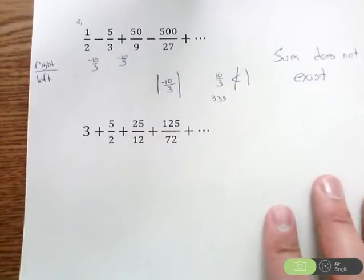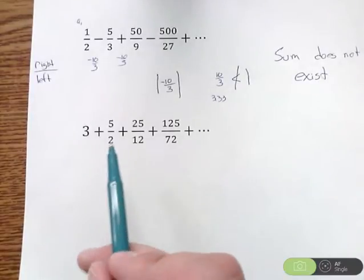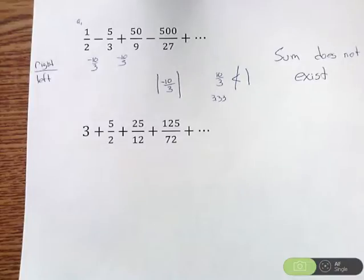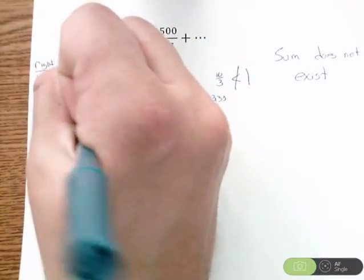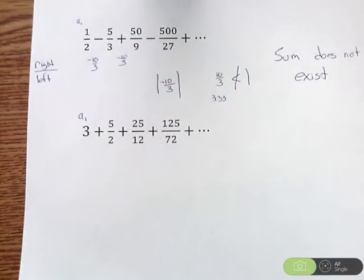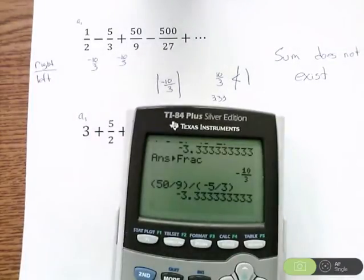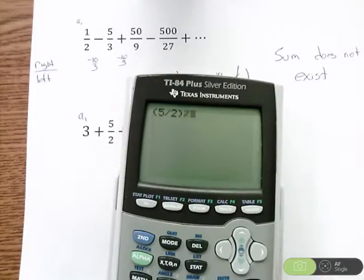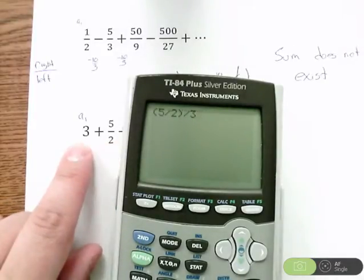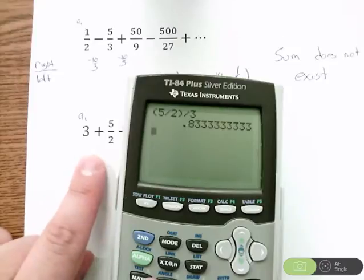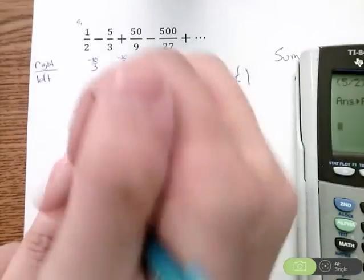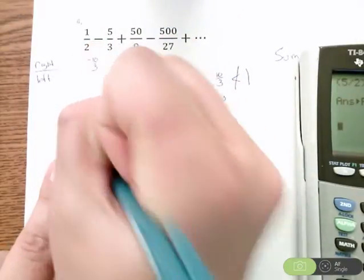All right, one last one and I'll wrap it up. We have 3 plus 5/2 plus 25/12 plus 125/72. Again, A1 is 3. For R, take right divided by left. In a calculator, I'm going to do 5/2 divided by 3. I got 0.833333. I want the fraction, so hit math, then fraction: 5/6. So our multiplier was 5/6.